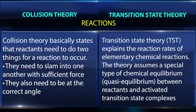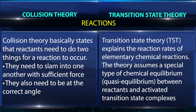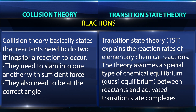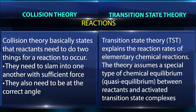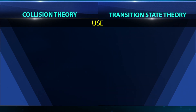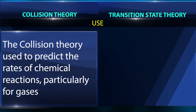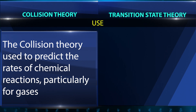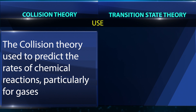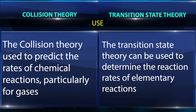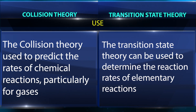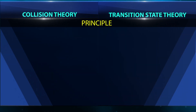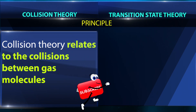Transition state theory assumes a special type of chemical equilibrium — quasi-equilibrium — between reactants and activated transition state complexes. Collision theory is used to predict the rates of chemical reactions, particularly for gases. Transition state theory can be used to determine the reaction rates of elementary reactions.